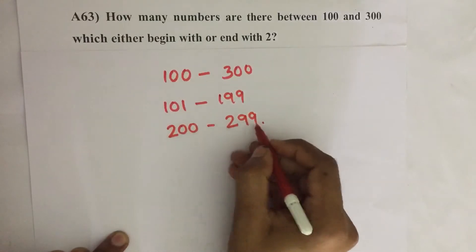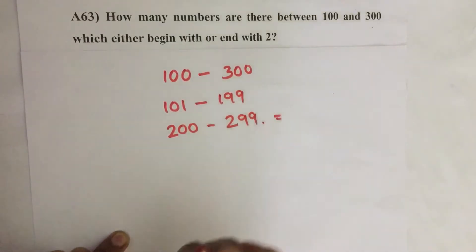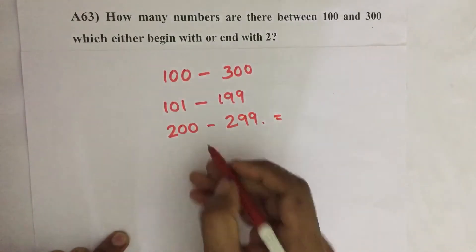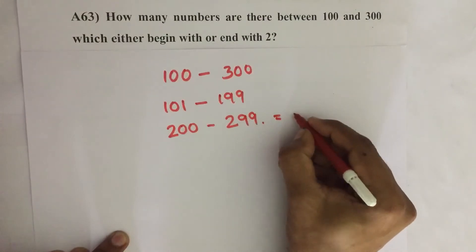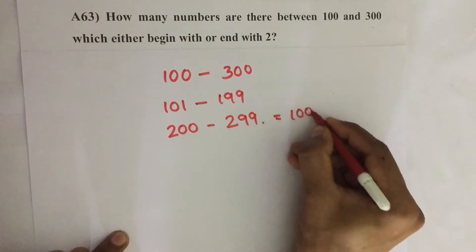200 to 299, all the numbers begin with 2. So there are 100 such numbers.